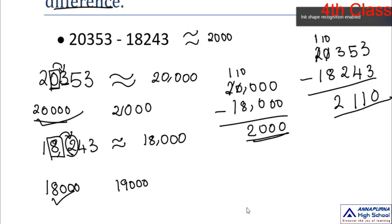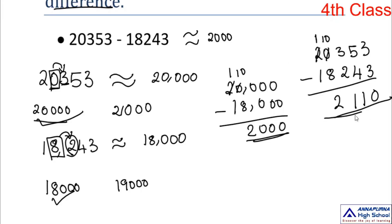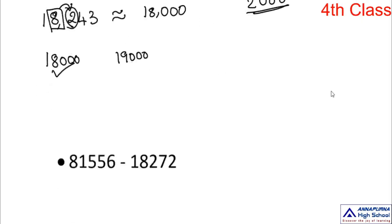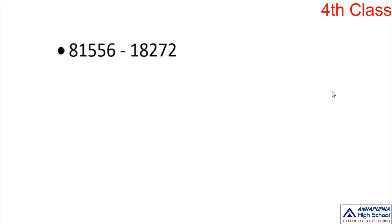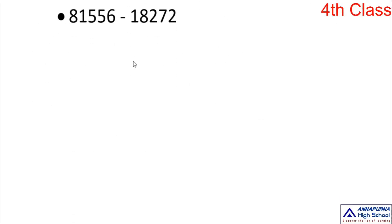The actual difference is 2,110. The next exercise for you: 18,556 minus 18,272. Do this sum yourself and send it to me.